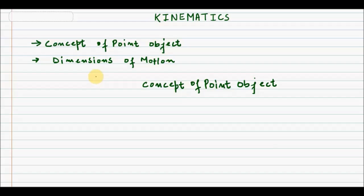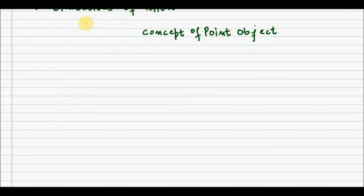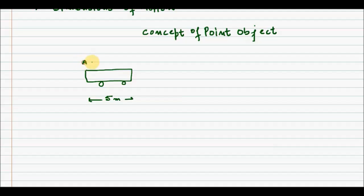Some of you might be asking why we actually need to study this concept in kinematics. To understand that, let's take an example. Say I have a car whose length is five meters, with ends named A and B, and this car wants to cross point C, located at a distance of one kilometer from point B.